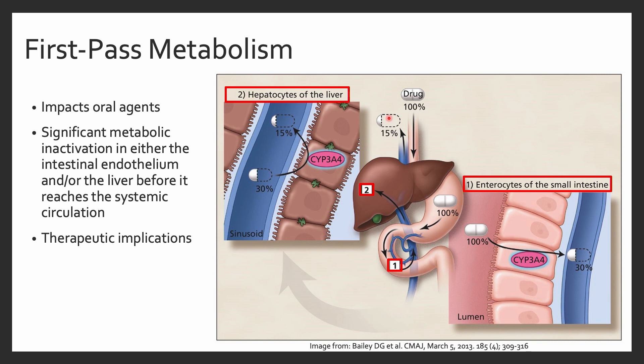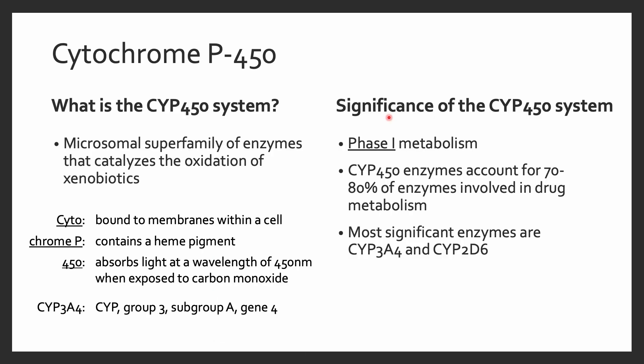The extent of first-pass metabolism depends on a number of physiological factors, including enzyme activity and GI motility. You might encounter this clinically when a drug administered orally requires a much higher dose compared to the same drug administered in its IV formulation.